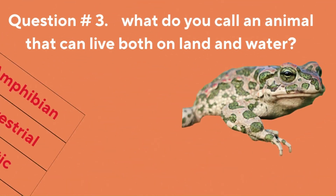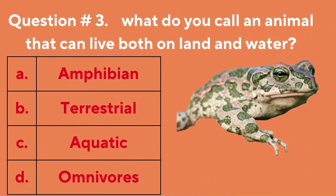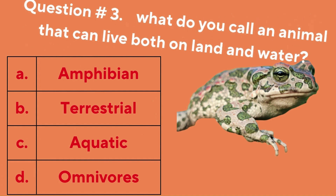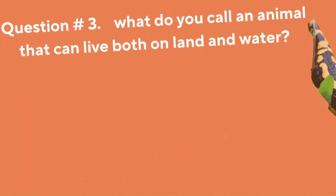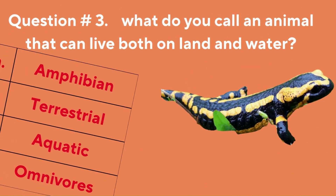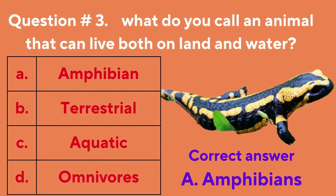Question number three: what do you call an animal that can live both on land and water? A. Amphibian, B. Terrestrial, C. Aquatic, D. Omnivores. The correct answer is A. Amphibians.